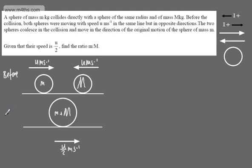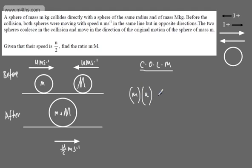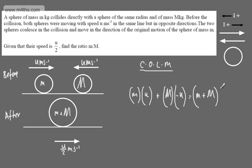Stating conservation of linear momentum: total momentum before equals total momentum after. Before: m × u (positive) + M × (−u) (negative, opposite direction). After: (m + M) × (u/2), which is positive as they move in the direction of little m.